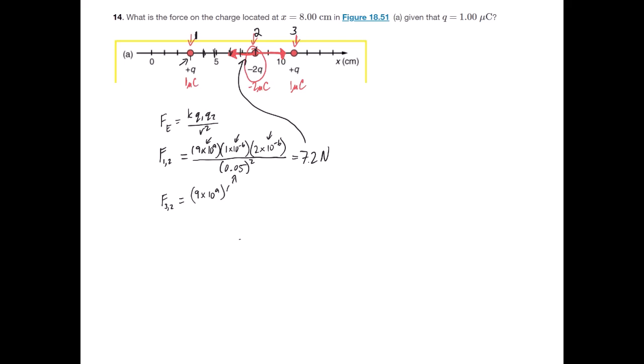Put in our k, put in the first charge, which I'll go ahead and put in the 2 times 10 to the negative 6 there, then I've got the charge 3, which will be 1 times 10 to the negative 6, and then we're going to divide all that by the distance, which in this situation is 3 centimeters, so 0.03 squared. And again, we go ahead and we punch that into our calculator, and we get a value of 20 newtons.